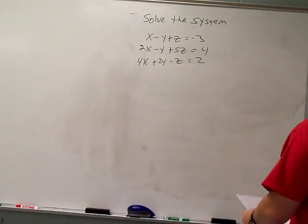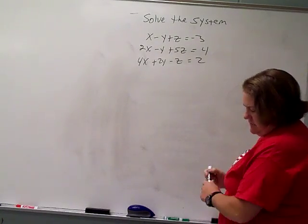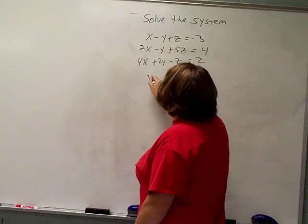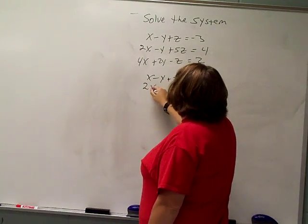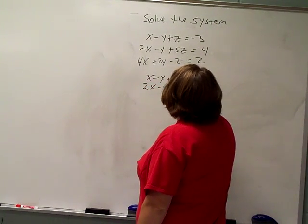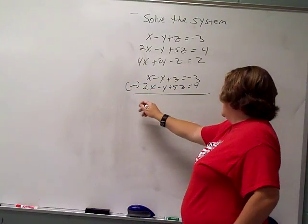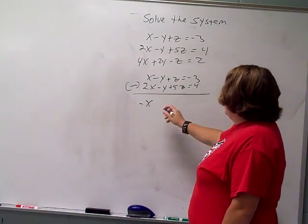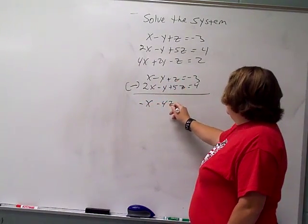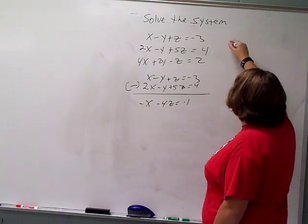Okay, first thing I did was I put the first and the second one together. I'm eliminating the y's. That got me x minus y plus z equals negative 3, and 2x minus y plus 5z equals 4. I'm subtracting because my y's are the same signs. 1x minus 2x is negative x. Negative y minus negative y is gone. z minus 5z is negative 4z, and 3 minus 4 is negative 1. So there's new equation number 1.